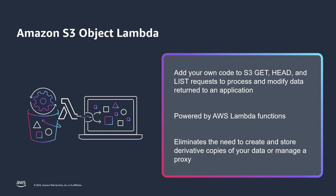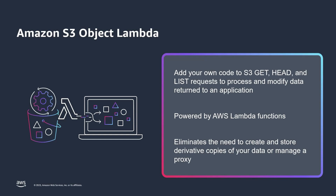You can also use S3 Object Lambda to modify the output of S3 LIST requests to create a custom view of objects in a bucket, and S3 HEAD requests to modify object metadata like object name and size. You can use S3 Object Lambda to enrich your object list by querying an external index that contains additional object metadata, filter and mask your objects list to only include objects with a specific object tag, or add a file extension to all the object names in your object list. For example, if you have an S3 object with multiple discrete data sets, you can use S3 Object Lambda to filter an S3 LIST response depending on the requester.